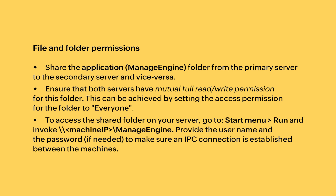File and folder permissions: make sure you share the application — the ManageEngine folder of the primary server — with the secondary server and vice versa. Ensure both servers have mutual full read and write permission for the folder. This can be achieved by setting the access permission to everyone. To access the shared folder on your server, go to Start menu, Run, and invoke the machine IP slash ManageEngine. Provide the username and password to make sure an IPC connection is established between the machines.